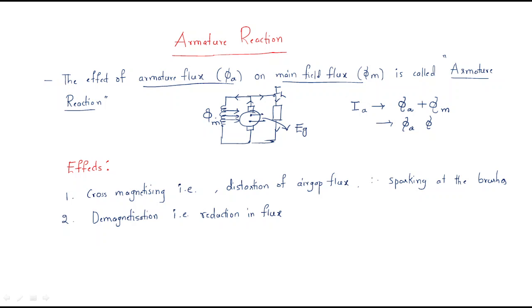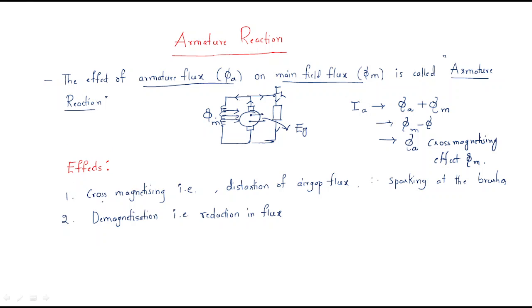This armature flux sometimes has a cross-magnetizing effect on the main field flux. These are the things that happen in armature reaction, so we need to understand how it works. The effects of armature reaction include cross magnetizing.